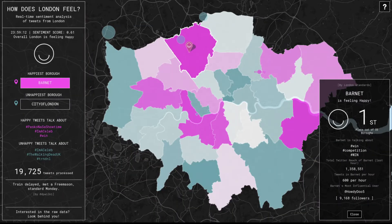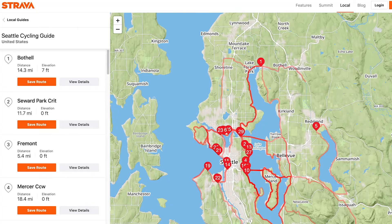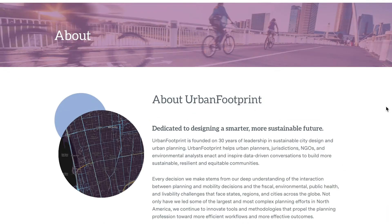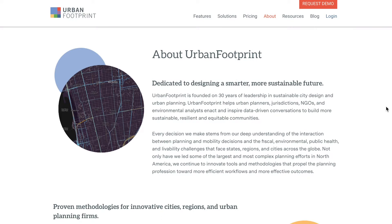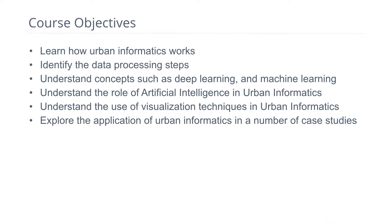This course covers a number of urban informatics case studies affecting the everyday lives of citizens and the efficiency of cities. You will understand how urban informatics works and learn about technologies and concepts influencing it, including big data, machine learning, data visualization, and data-driven decision making. By the end of this course, you will have a better understanding of how urban informatics is changing our cities.